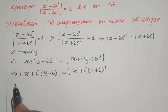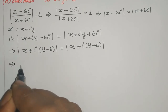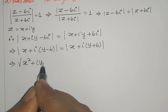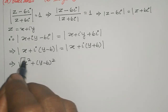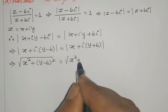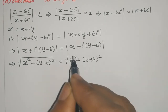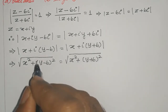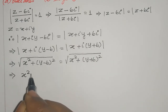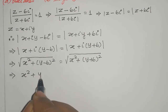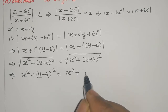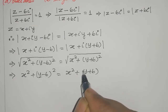Apply the modulus formula. Left side: root of x squared plus (y minus 6) squared. Right side: root of x squared plus (y plus 6) squared. Since both sides have a square root, squaring both sides gives x squared plus (y minus 6) squared equal to x squared plus (y plus 6) squared.